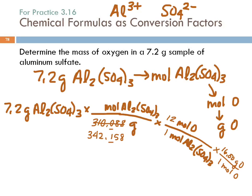Now, I'm going to do this, and I want at least one of you to do this so that we can get the right answer. 7.2 divided by 342.158 times 12 times 16. 4.04. You got that? Awesome. 4.04 grams of oxygen.